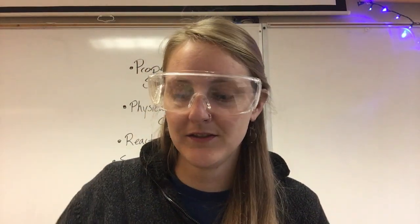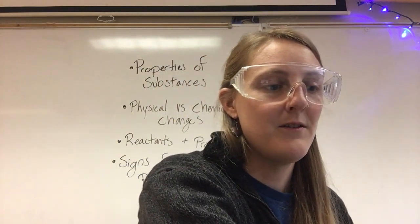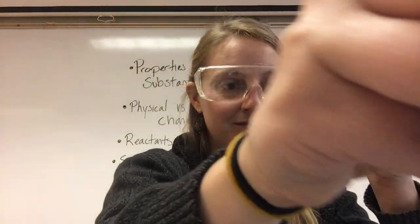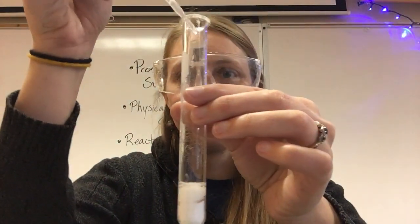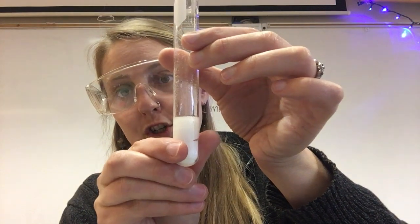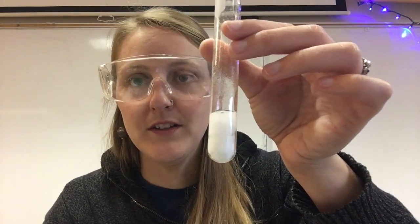So those four things again: color change, formation of a new solid or a precipitate, bubbles, and finally temperature change. Those are four ways you know that a chemical reaction is probably happening. Thank you for listening, and if you have any questions please get in touch at Q&A time.